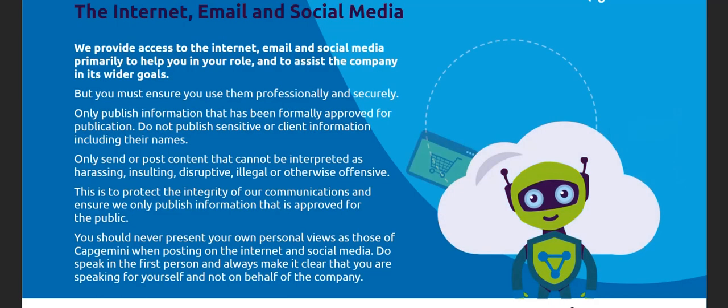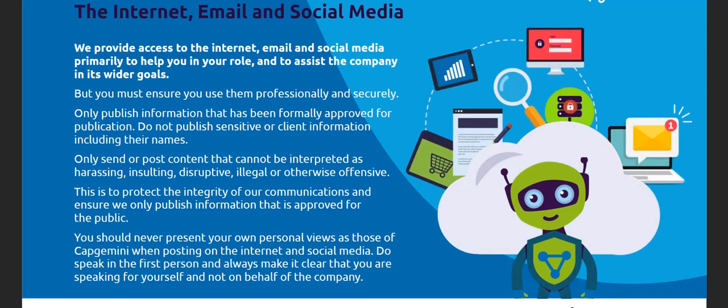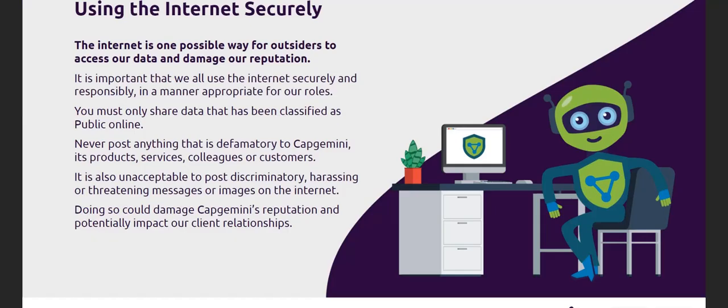We must use the Internet, email and social media professionally and securely. You should only publish information that has been formally approved for publication. It must not contain sensitive or offensive information. When expressing a personal view, speak in the first person. Remember, providers can use the things we post on the Internet to access our sensitive information or damage our reputation. To help prevent this, you should only share information classified as public online.